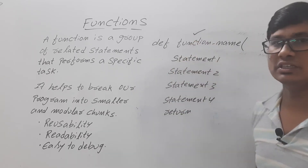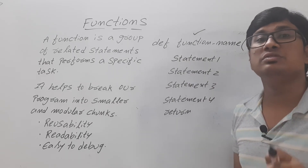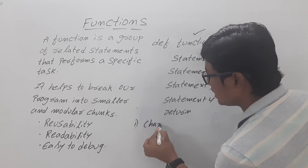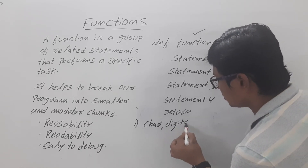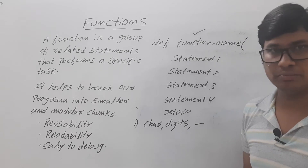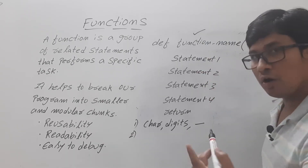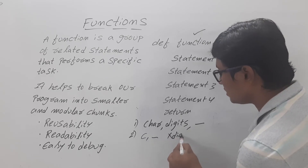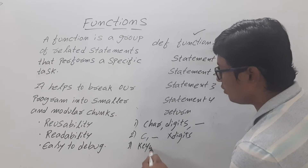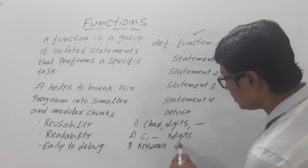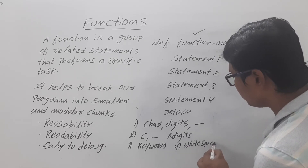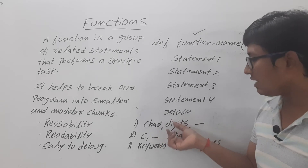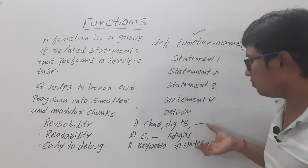Remember one important point related to the function name: the function name should always follow the rules of variables. The name should consist of characters, digits, or underscores — no other special symbols. It should start with a character or underscore, not a digit. Keywords are not allowed, and white spaces are not allowed between the name.